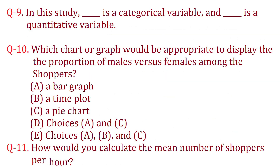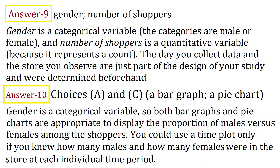Question 9: In this study, which is a categorical variable and which is a quantitative variable? Answer 9: Gender is a categorical variable and number of shoppers is a quantitative variable. The categories for gender are male or female, and number of shoppers is a quantitative variable because it represents a count. The day you collect data and the store you observe are just part of the design of your study and were determined beforehand.